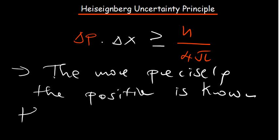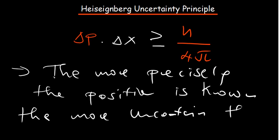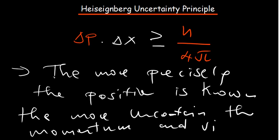...the more uncertain the momentum becomes. And vice versa. So there can also be a point where you know more about the momentum, and then you'll be very uncertain about the position.